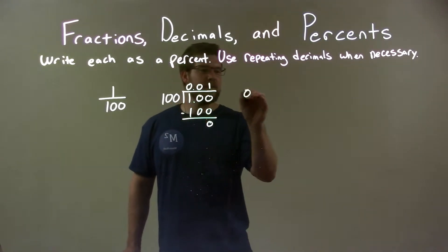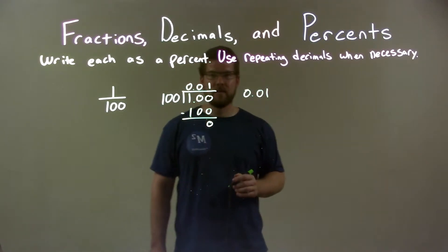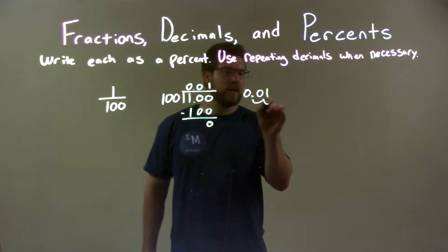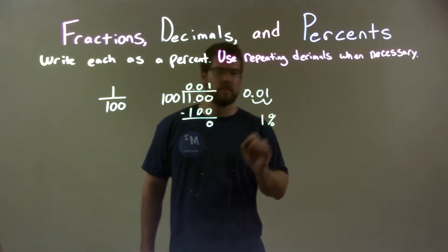Very easy. 0.01 as a decimal. Well, then we need to convert that as a percent. We take the decimal place, move it two spots to the right, and we're left with just 1%, and that's it.